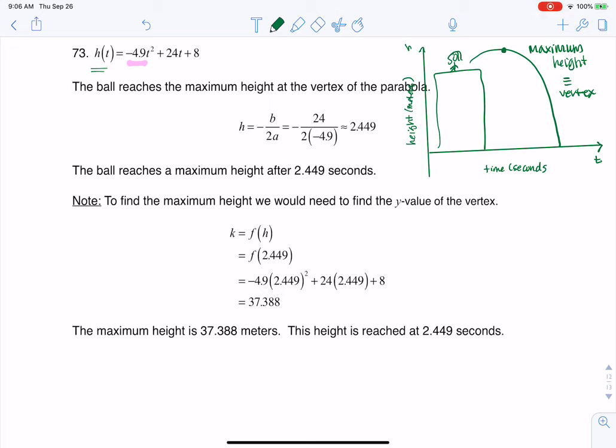You see me plugging into the formula negative b over 2a. And then that gives me that my maximum height occurred at 2.449 seconds. And that's all I was asked to find. So that's why you see my answer there.